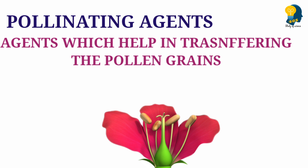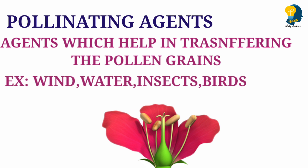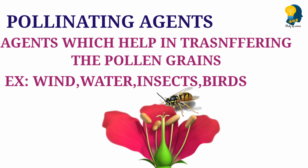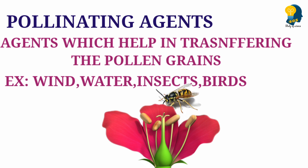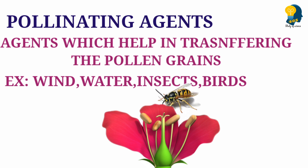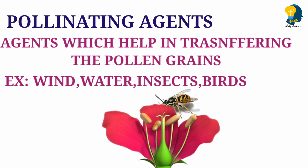Some examples of pollinating agents are wind, water, insects, and birds. These agents can transfer pollen grains from the anther to the stigma. For example, you might have seen insects sitting on a flower. The pollen grains get attached to the body of the insects, and when the insect sits on another flower, the pollen grains attached to their body get transferred to the stigma of that other flower — or sometimes the same flower. This is how insects help in transferring the pollen grains from anther to stigma.